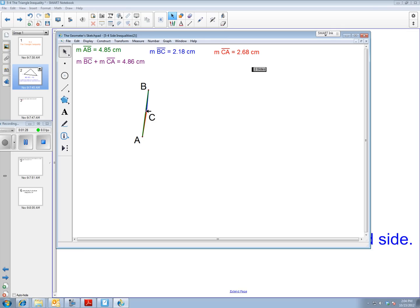As I get closer, it's really close. And finally, I get it to be equal when the segments are on top of each other, which would no longer make a triangle.